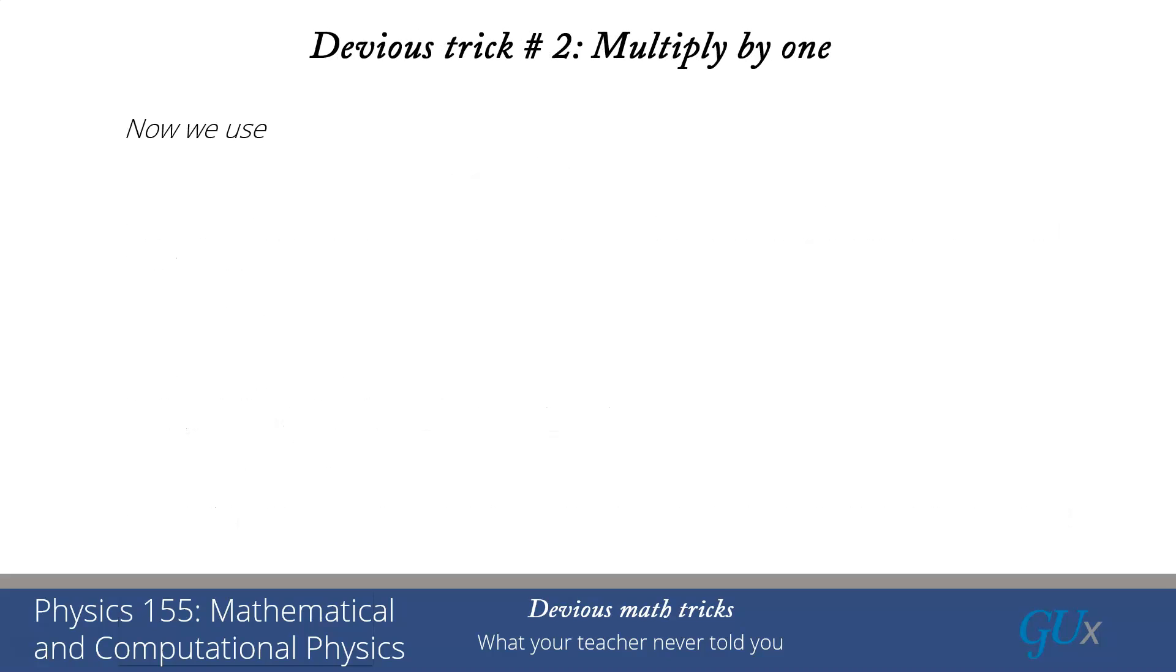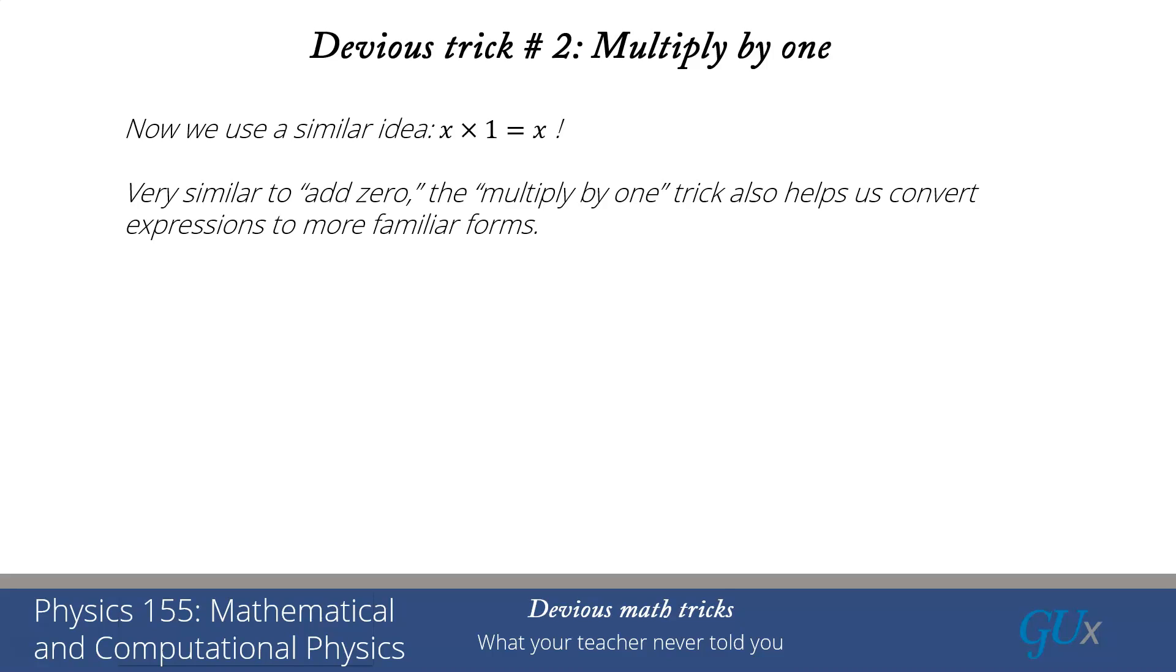Devious math trick number two, very similar. We multiply by 1. Simply says x times 1 is equal to x. This is something that I'm sure you have seen before. It's very similar to the add zero trick. It also helps us convert many expressions into more familiar forms.